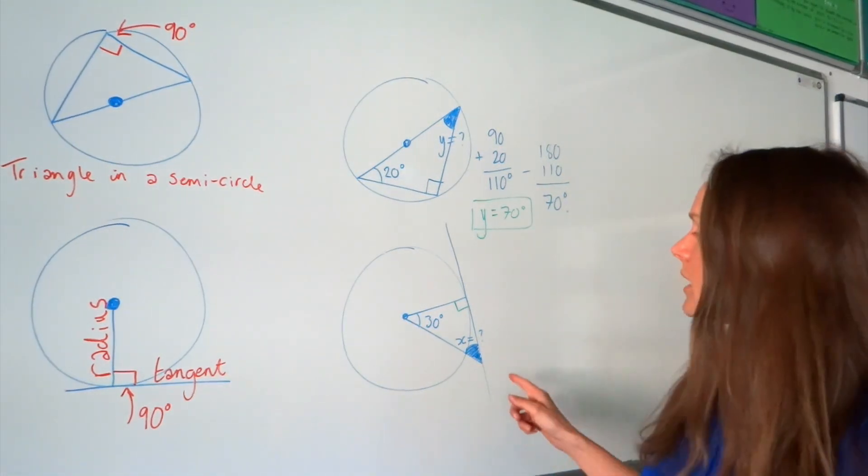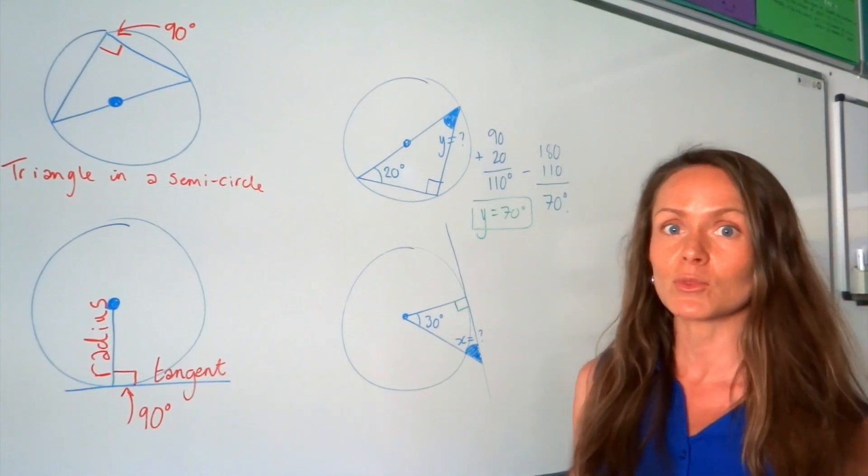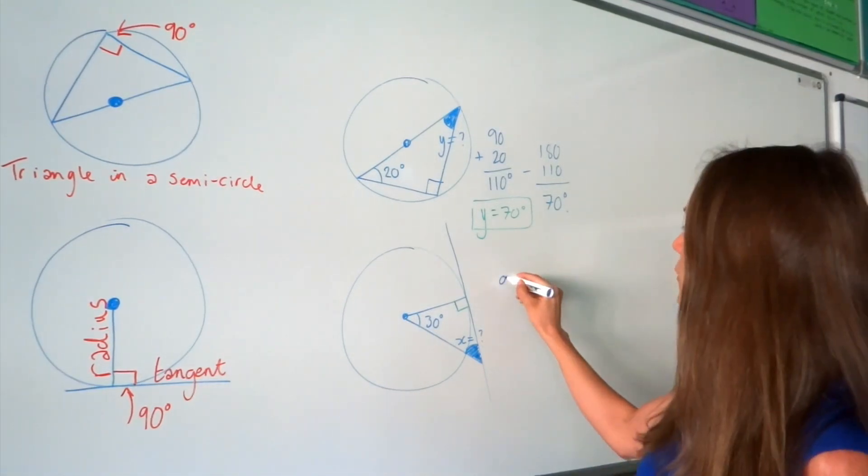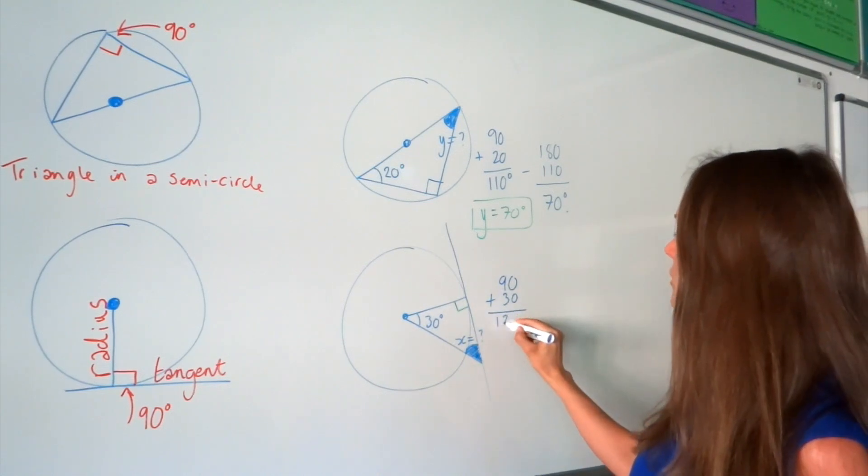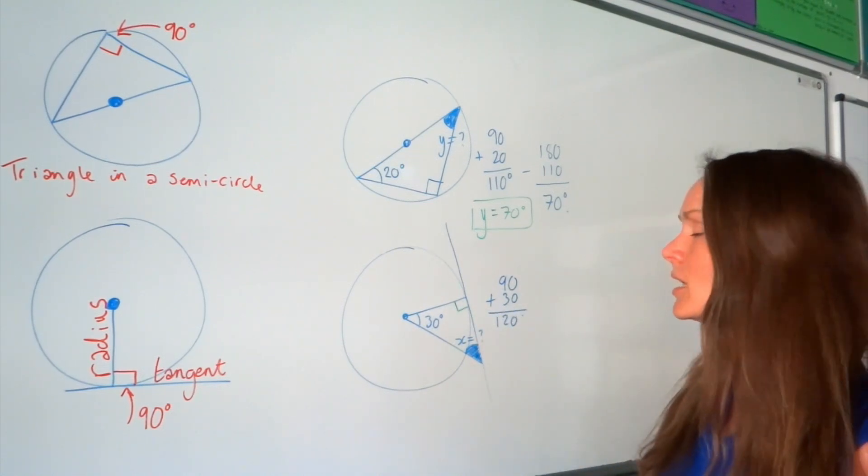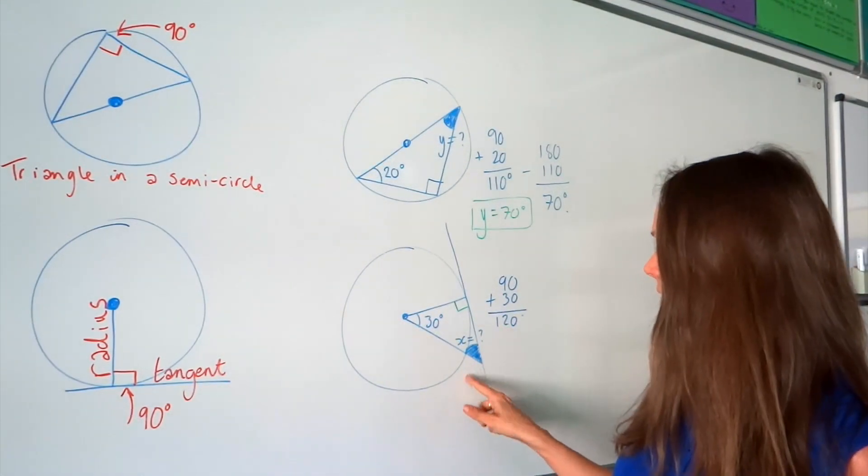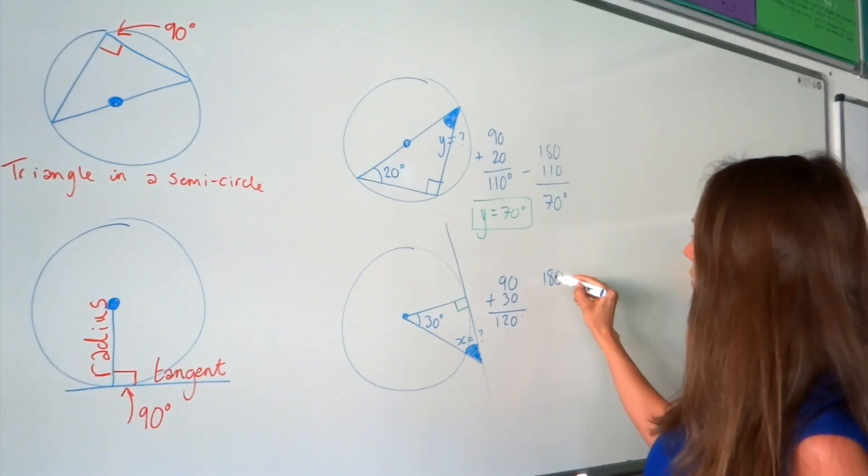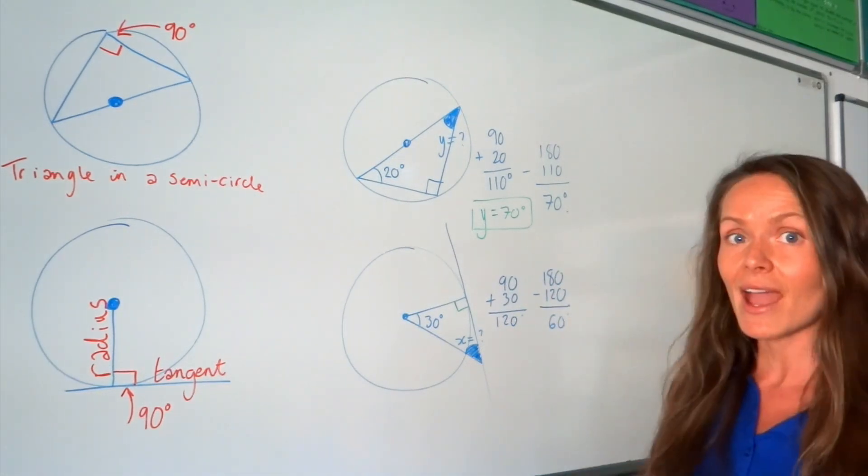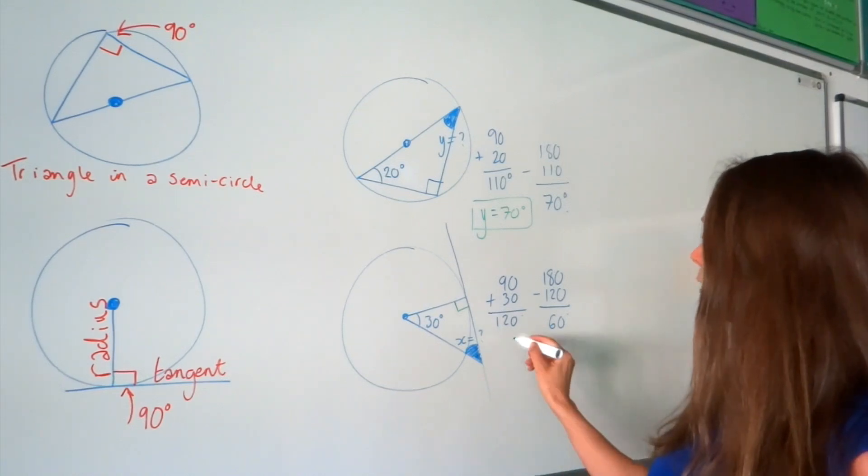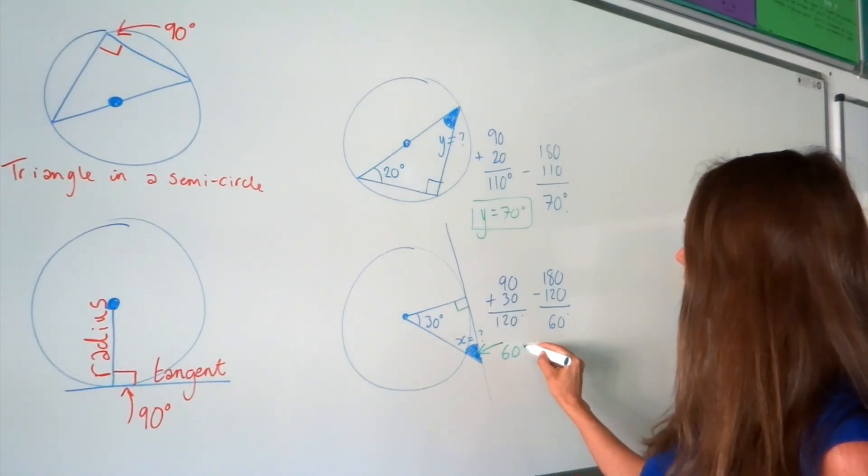So, the same as before, in a triangle, all the degrees add up to 180. So, so far, I've got the 90 here, plus the 30 over here, which leaves me with 120. But we need to find this one down here. So subtract that answer from 180 to work out the missing angle. So that means the value of X is 60 degrees.